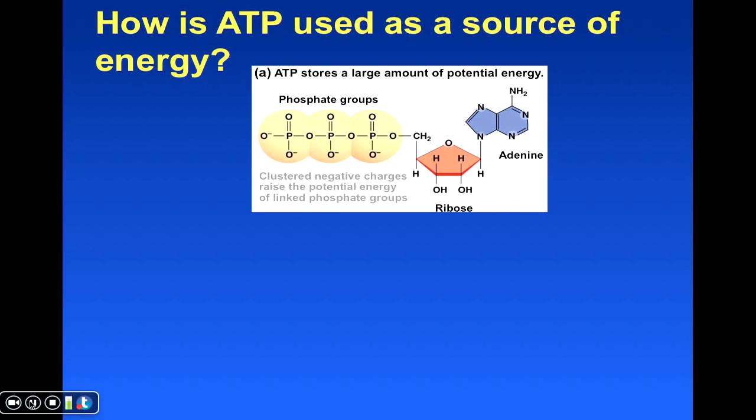Well, what we're looking at here is the structure of ATP. So adenosine triphosphate. Notice it has three phosphate groups, shown here in yellow, one, two, three.